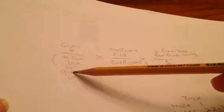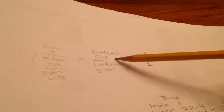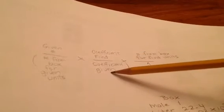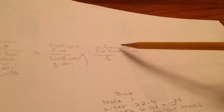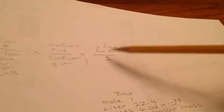Over the number given from the box, that's the reference numbers, over the coefficient of what you're trying to find, over the coefficient of what you were given, and then I've got the number from the box for the find units over 1.